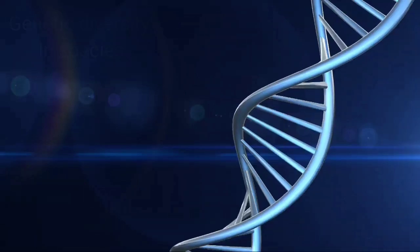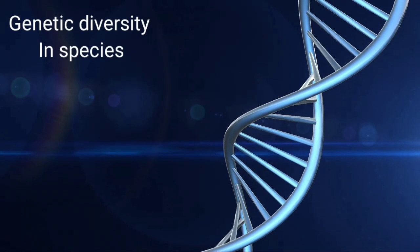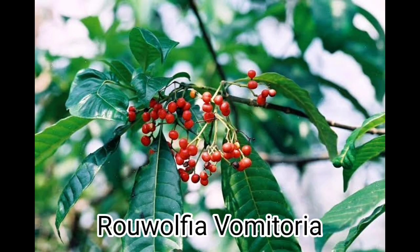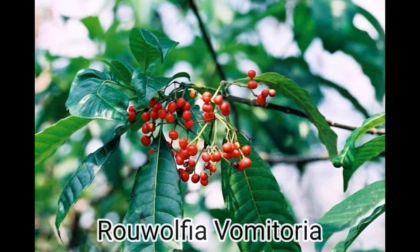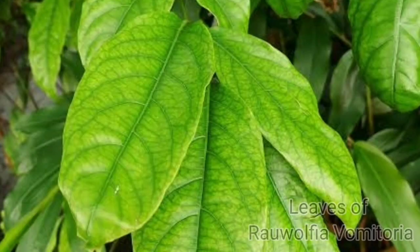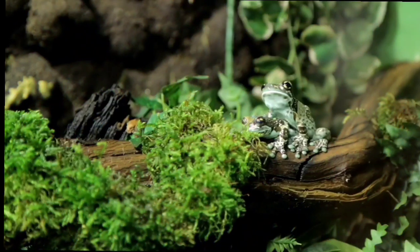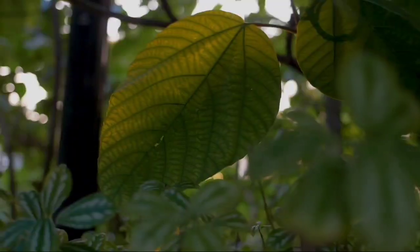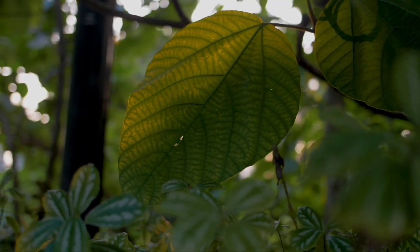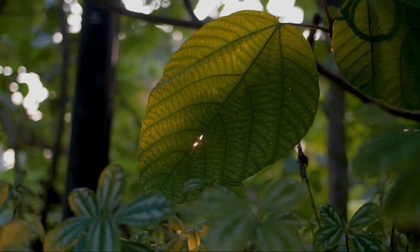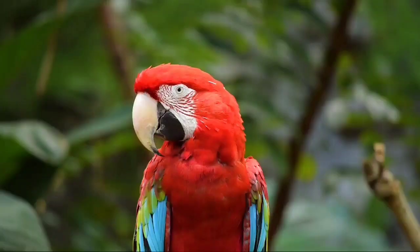Now let's discuss all the classifications of biodiversity in detail. Firstly, genetic diversity is the total number of genetic characteristics in the genetic makeup of a species. It ranges widely from the number of species to differences within species and can be attributed to the span of survival for a species. Secondly, species diversity is defined as the number of species that live in a particular location.